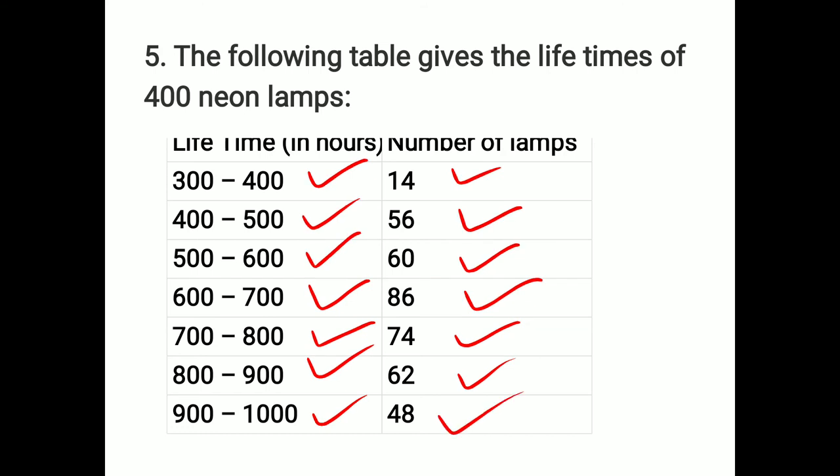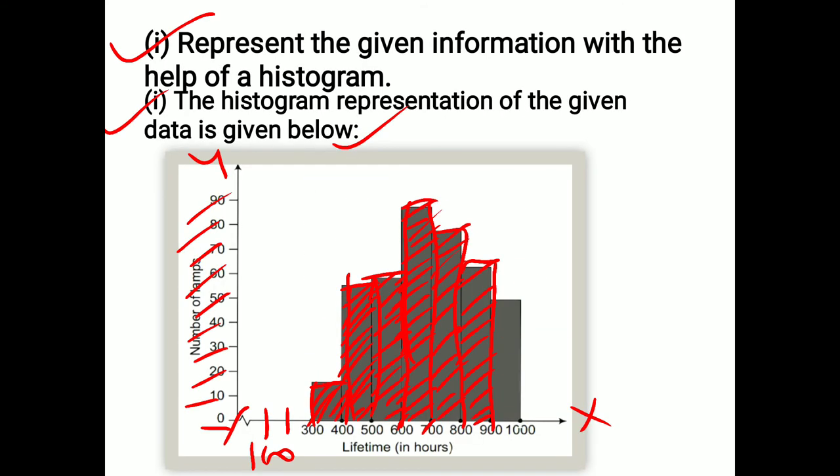From 900 to 1000, 48, which means from 50 to 2 lines less. We have done this and what will we do here? Shaded or dark part. So this is the lifetime in hours and this is the number of lamps, right?